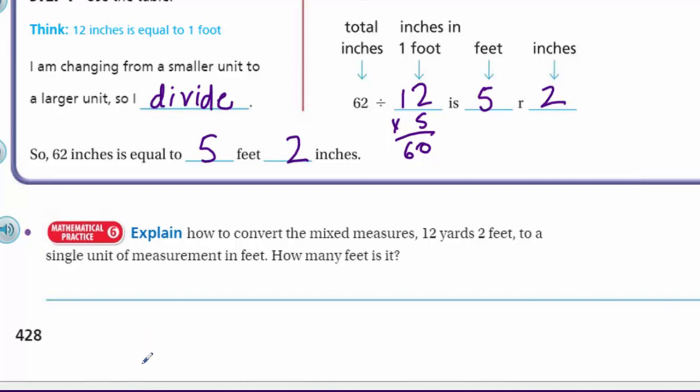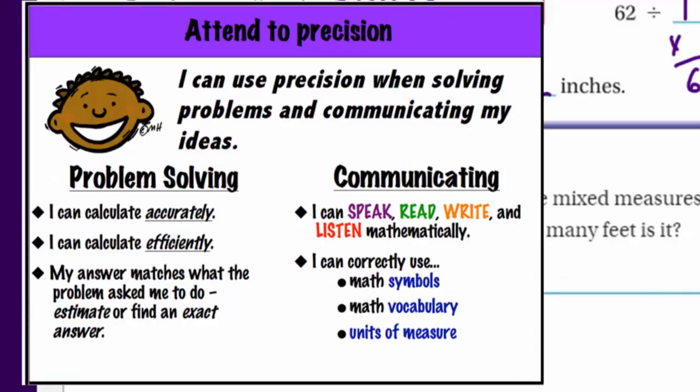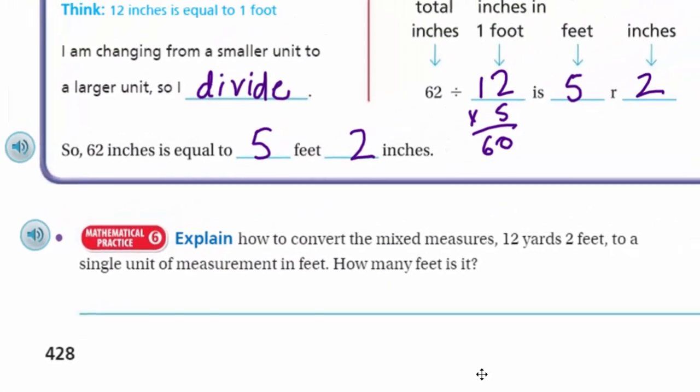Mathematical practice 6: attend to precision. I can use precision when solving problems and communicating my ideas. In problem solving, I calculate accurately and efficiently, and my answer matches what the problem asked. In communicating, I can speak, read, write, and listen mathematically — correctly using math symbols, vocabulary, and units of measure. That's exactly what we're doing here.